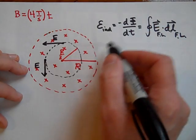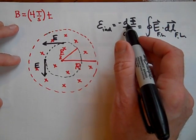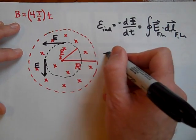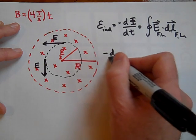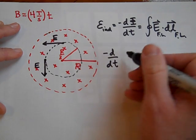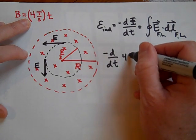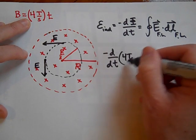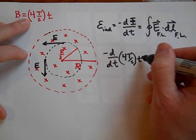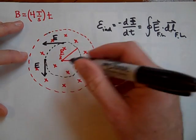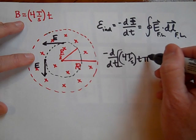How fast is the flux changing with time? Well, first I have to get an equation for flux. So it's going to be the negative derivative with respect to time, and here's my equation for flux. It's going to be B—4 Teslas per second times T times the area.